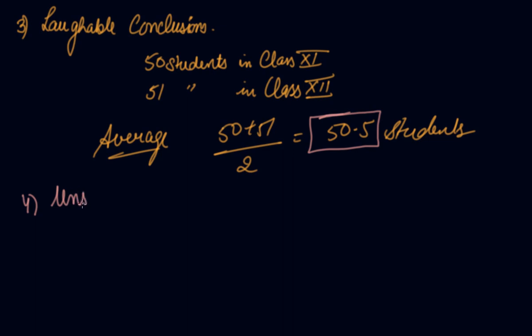The fourth demerit is unsuitability: arithmetic mean is not a suitable measure in the case of percentages or proportionate values.